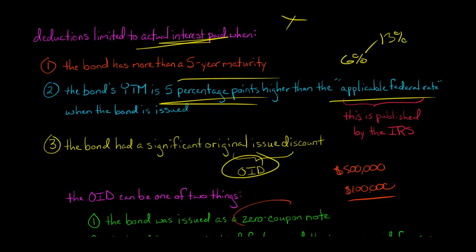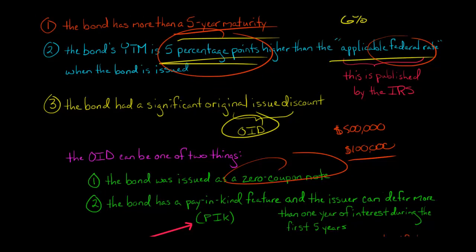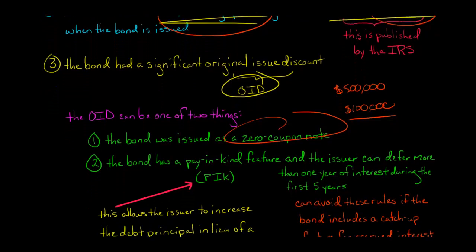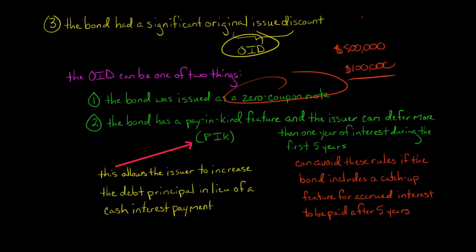When there's a zero coupon note, we'd say the bond had an original issue discount. So if it had more than a five-year maturity, more than five percentage point difference from the federal rate, and it was a zero coupon note, then we'd say, okay, you can't take any deductions for the implicit accrued interest. It's only when you actually pay out interest in cash.